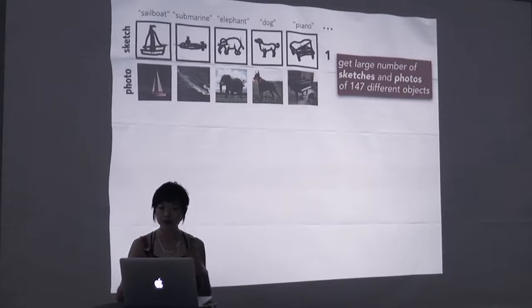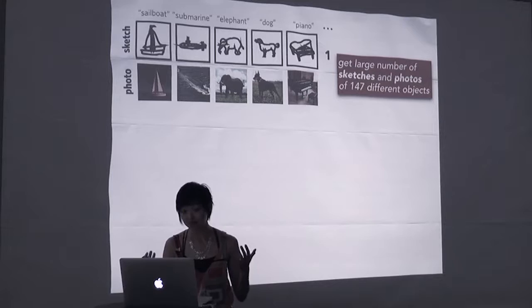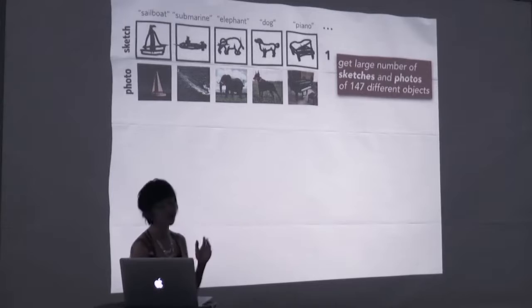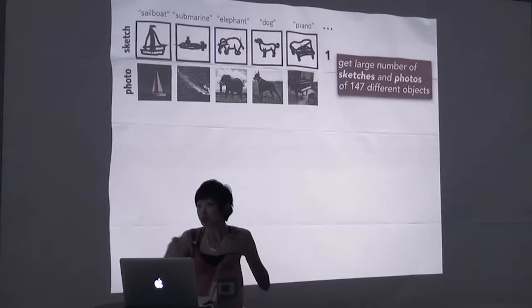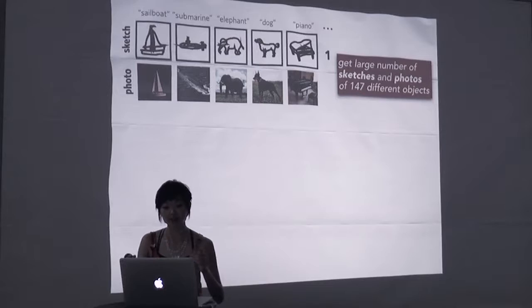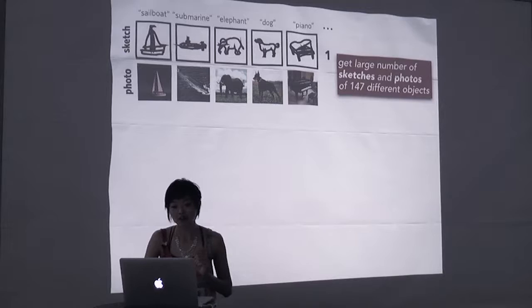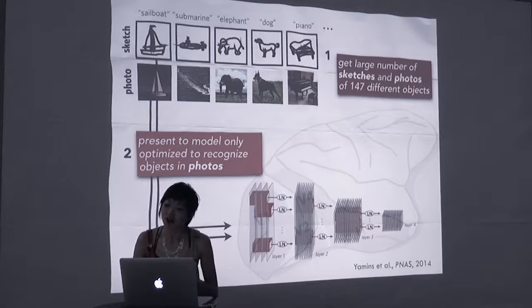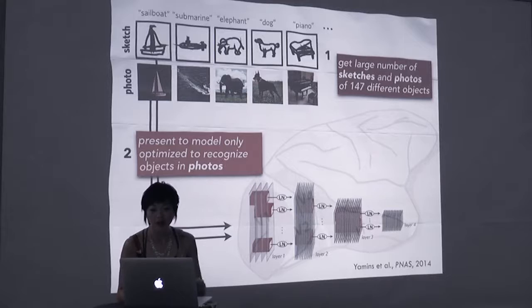We assembled a set of images containing a large number of sketches produced by non-experts and photos of objects from 147 basic level categories. Here are just some examples. Now, one way to measure high level visual similarity might be to record neural activity in ventral temporal cortex, say by presenting sketches and photorealistic images to a person lying in an fMRI scanner and monitoring activity in their brain.